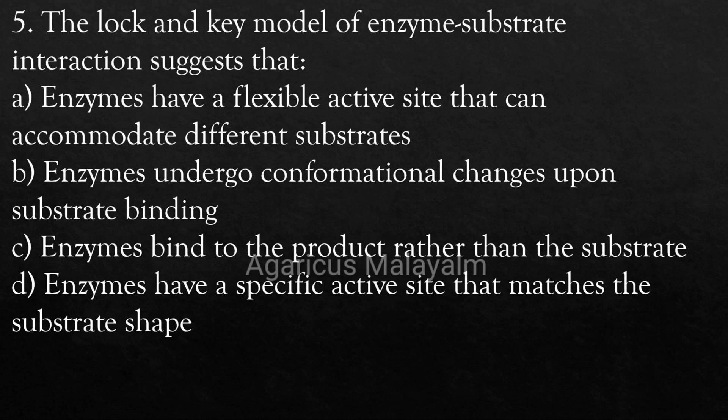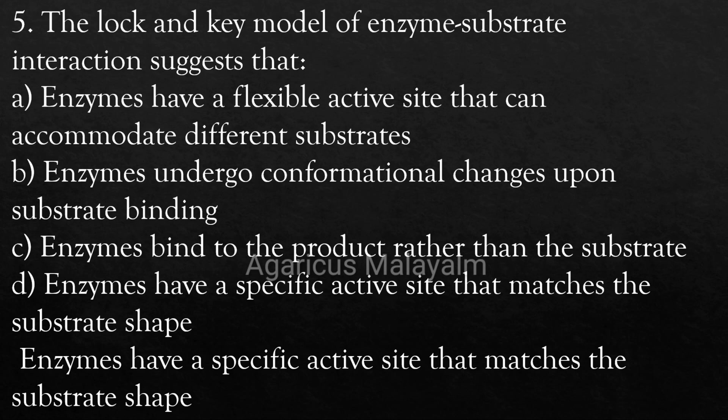Fifth Question: The lock and key model of enzyme-substrate interaction suggests that? Option A: Enzymes have a flexible active site that can accommodate different substrates. Option B: Enzymes undergo conformational changes upon substrate binding. Option C: Enzymes bind to the product rather than the substrate. Option D: Enzymes have a specific active site that matches the substrate shape. Correct Answer: Option D.